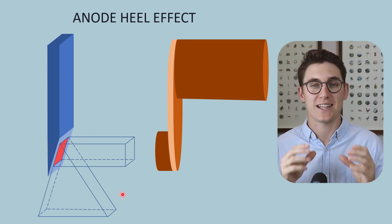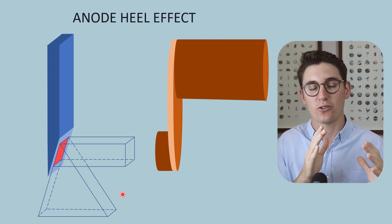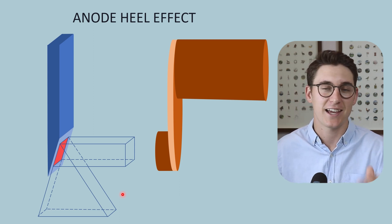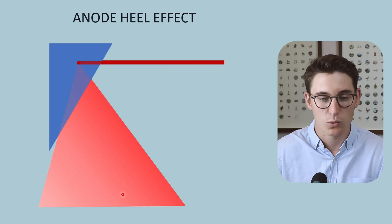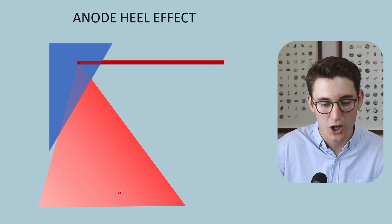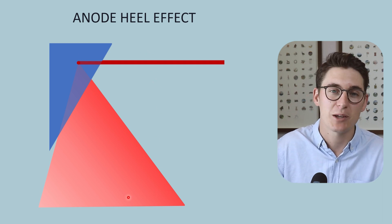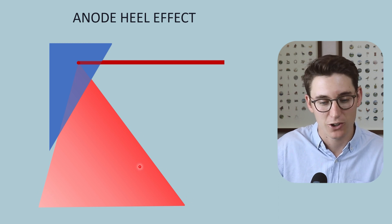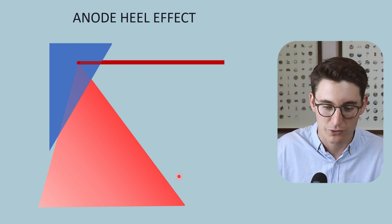Now today we're going to look at the anode heel effect and I don't want you to get confused with that variation in effective focal spot size and the anode heel effect. So what exactly is the anode heel effect? Well the anode heel effect describes the variation or the difference in x-ray beam intensity between our anode side and our cathode side of our x-ray beam or of our field.